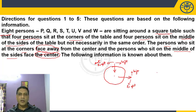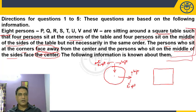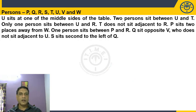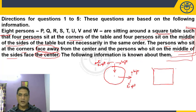According to this puzzle, the arrangement would be like this. The moment we read the initial information — four persons at the corners of the table and four persons at the sides of the table — we know what kind of arrangement to make. The persons who sit at the corners face away from the center, and the persons who sit at the middle of the sides face the center. This takes about 15 to 20 seconds to understand.